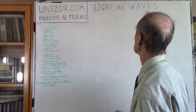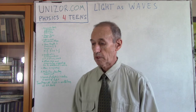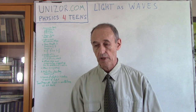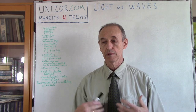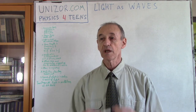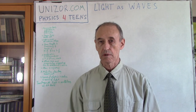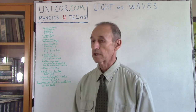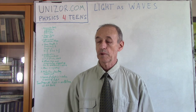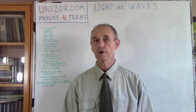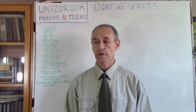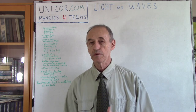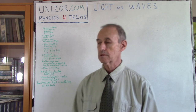Let's talk about light as waves. Let's start with something I basically finished the previous lecture on — that there are certain phenomena, certain properties of light which cannot be explained from the corpuscular standpoint. Primarily these are interference, diffraction, and polarization of light. Let's talk about interference as the major manifestation of the shortcomings of corpuscular theory. Only the wave theory of light could actually explain the interference property.